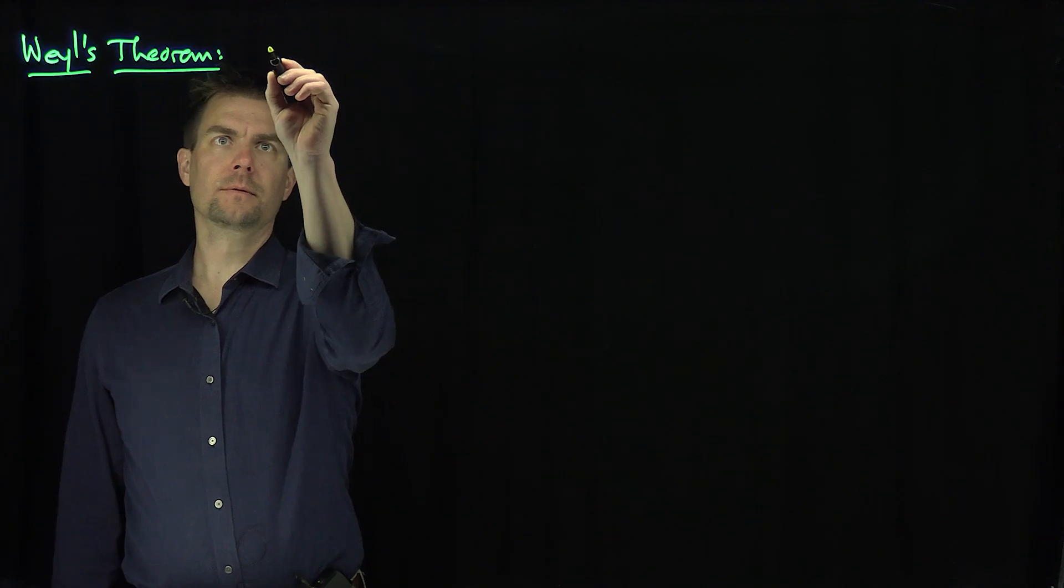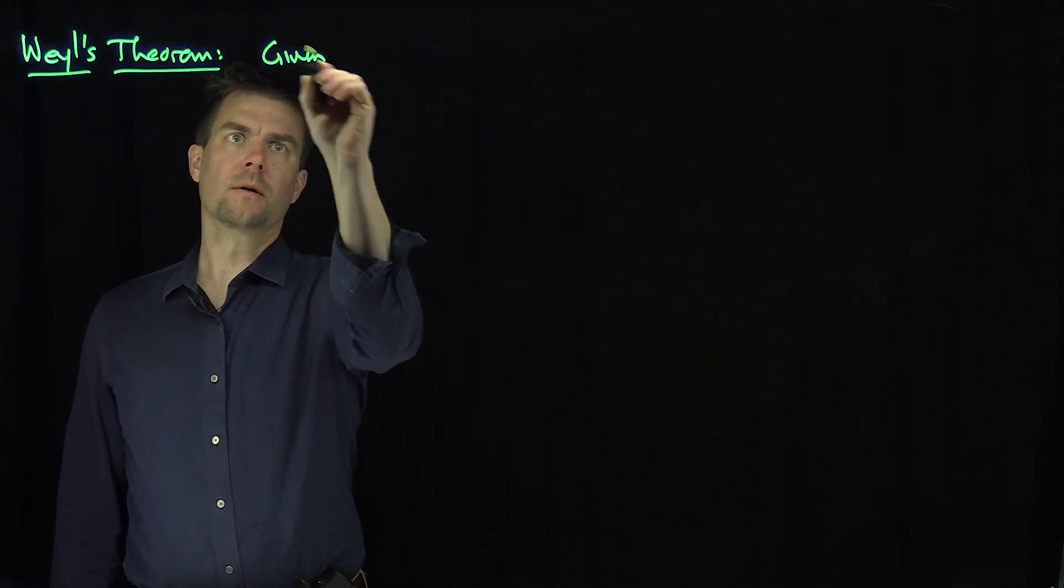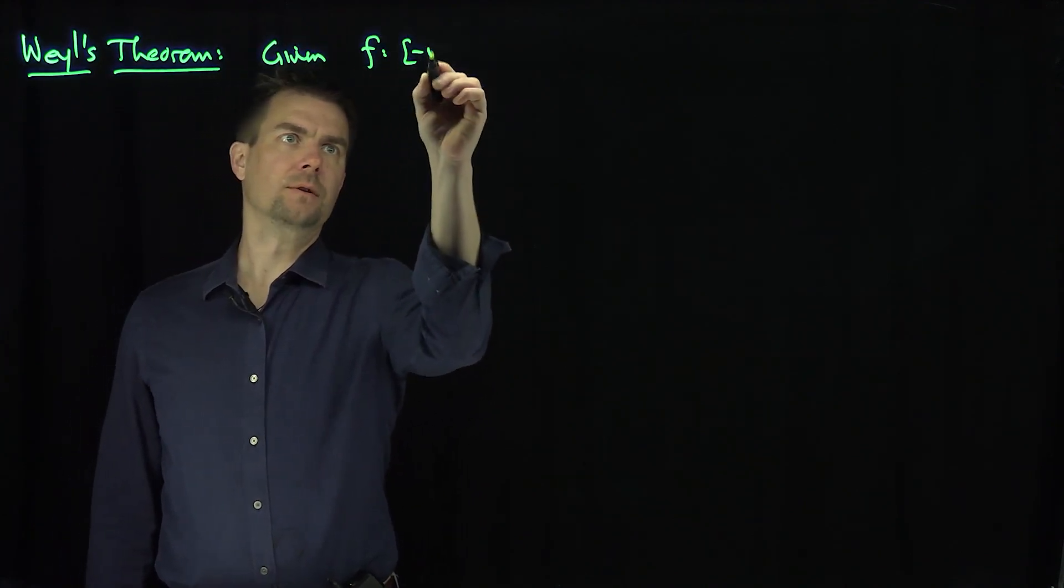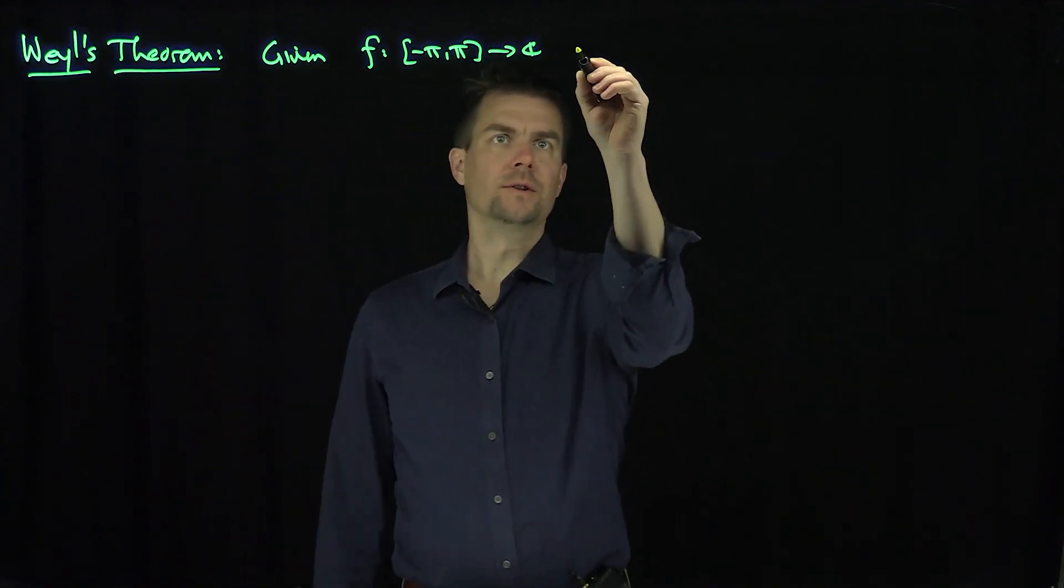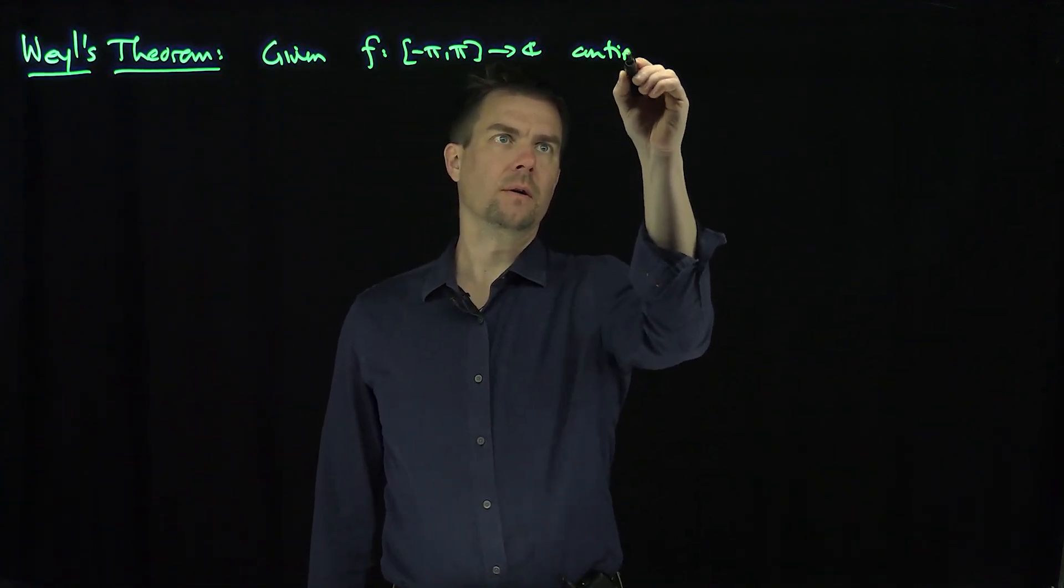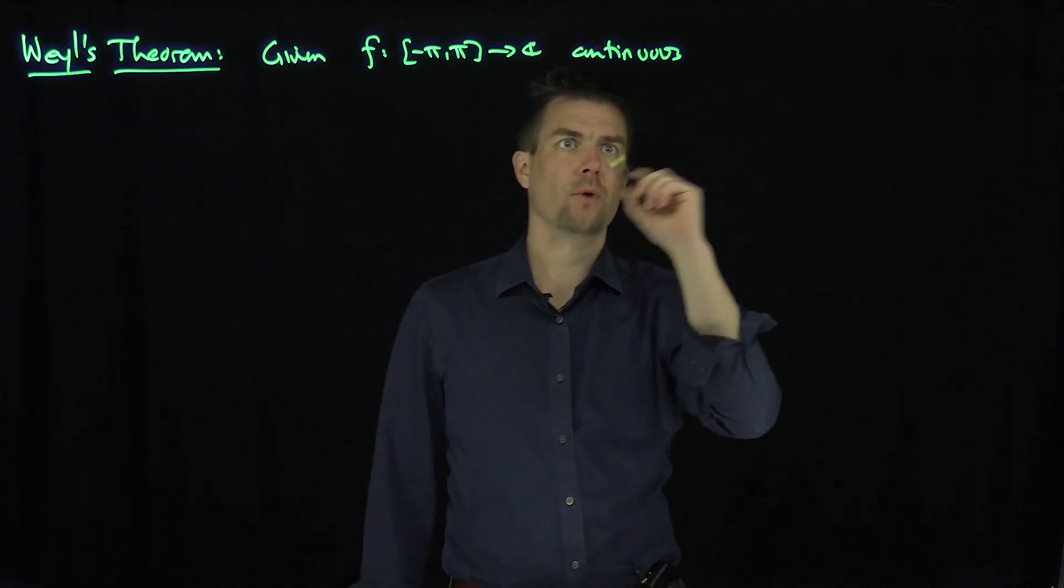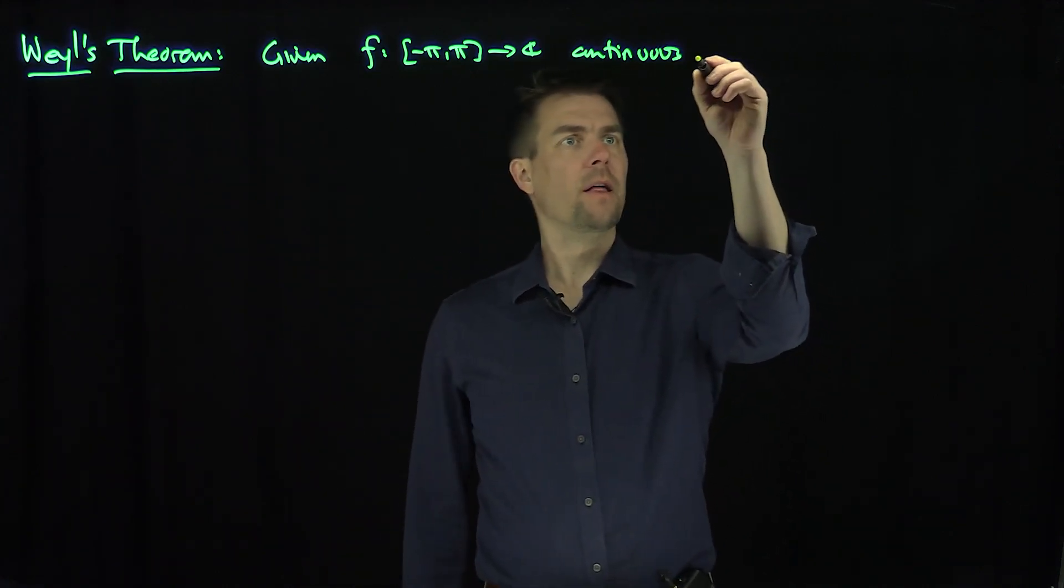It states that given F, which maps the torus into C, continuous, and we can even say 2π periodic if we want, so just a continuous function, then